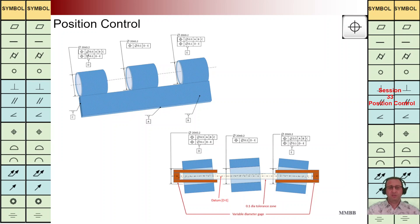The first one: we are going to have a cylinder with the diameter of 0.5, back to datum ABC. A is this plane, B is this plane, C is this plane. We are going to fix this component and we are going to have this large cylinder. The second one: we are going to have a small cylinder with the diameter of 0.1, back to datum DC. D is the axis of the first hole and E is the axis of the last hole.